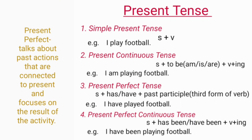Next is present perfect tense. It talks about past actions that are connected to the present, and it focuses on the result of the activity. It is formed of Subject plus 'has' or 'have' plus past participle, which is the third form of the verb.